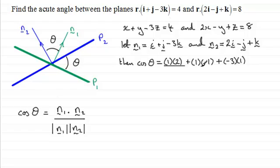And this is all divided by the magnitude then of each vector multiplied together. So if we take the magnitude of n1, that's going to be 1 squared plus 1 squared plus 3 squared.